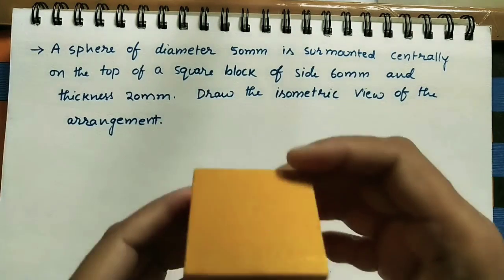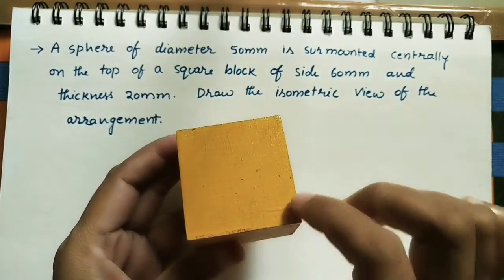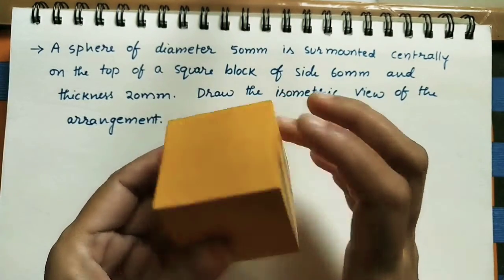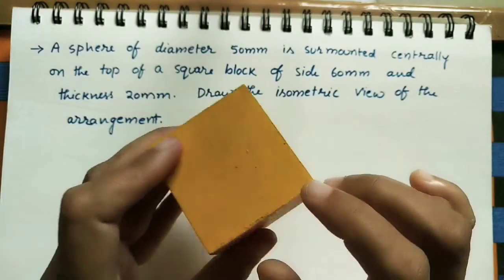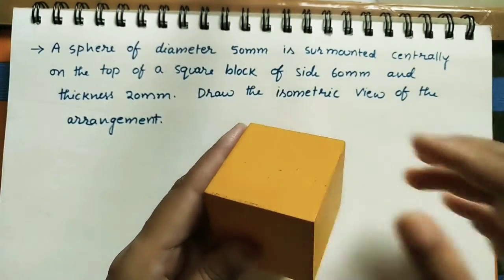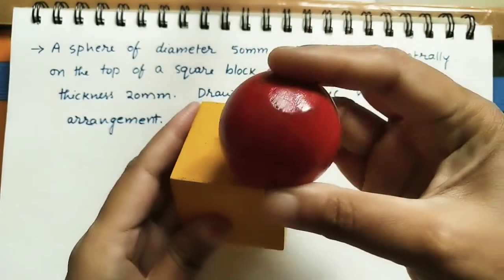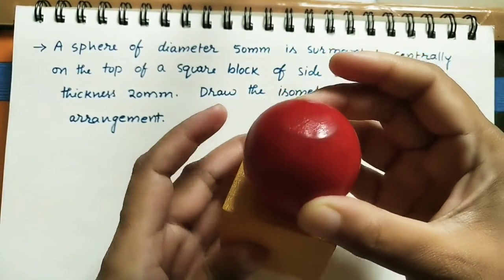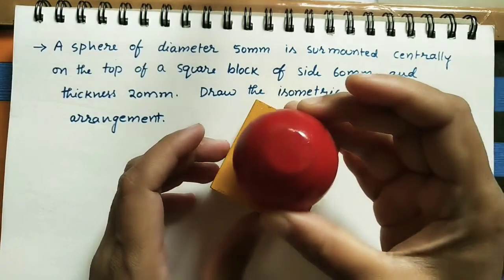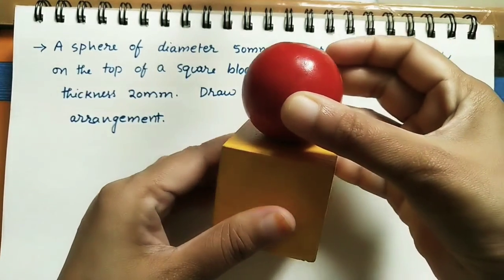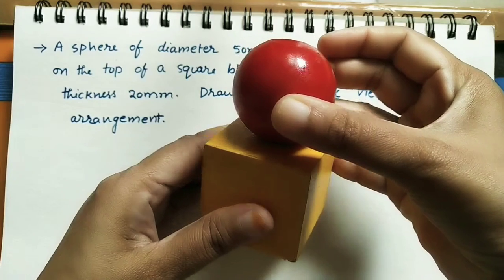If you take, for example, this is a square block — the top surface is square, meaning all four sides have equal length, and this side is also square with all four sides of equal length. So this is a square block on which centrally one sphere is mounted. Centrally means at the center of this square. This is the sphere. We need to do the three-dimensional diagram of this.